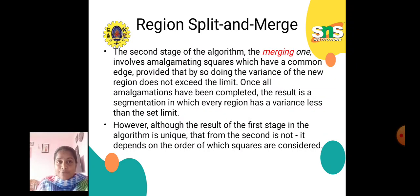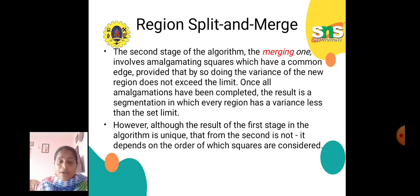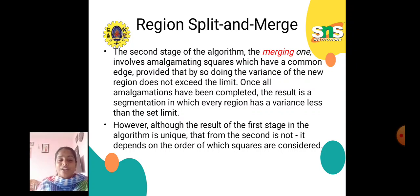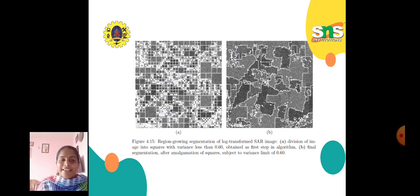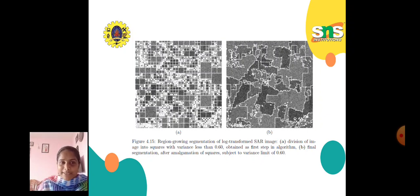The second stage of the algorithm is merging, which involves amalgamating squares that share a common edge, provided that by doing so the variance of the new region does not exceed the limit. Once all squares have been processed, the result is a segmentation in which every region has a variance less than the set limit. The result of the first stage is unique, but the second stage is not — it depends on the order in which squares are considered. An example shows the division of the image into squares with variance less than 0.6, and the final segmentation after amalgamation with the same variance limit.